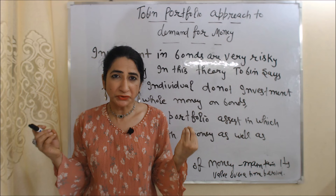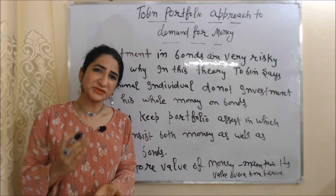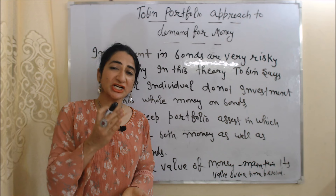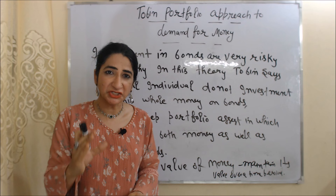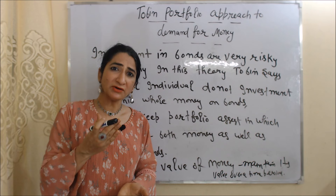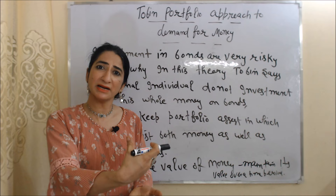As we know, investment in bonds is very risky. That's why in this theory, Tobin says a rational individual does not invest their whole money in bonds. Instead, they keep a portfolio of assets which includes both money as well as bonds.